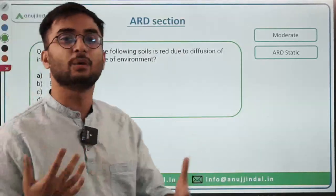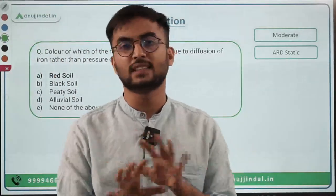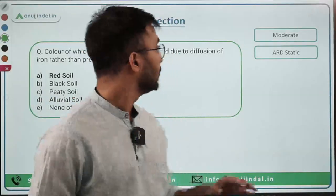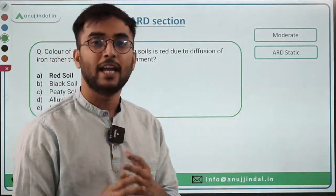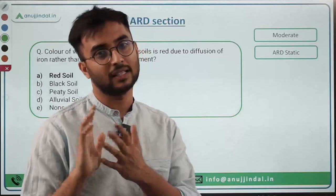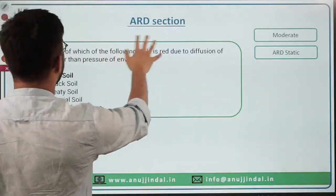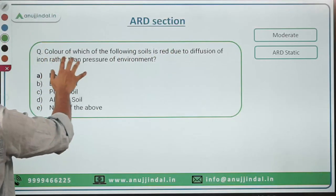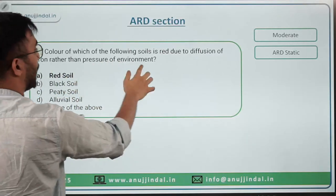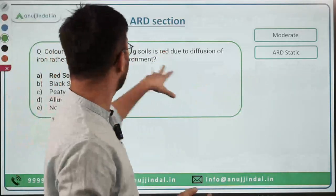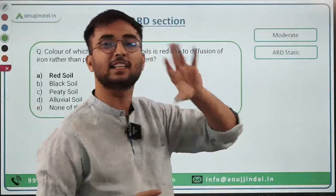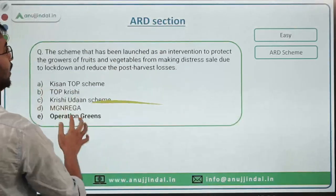Now let's look at some actual questions to understand their nature. If you understand the nature of the questions, the entire ARD section becomes a cakewalk. First question: 'The color of which soil is red due to diffusion of iron rather than pressure of environment?' This is a moderate, direct static question from the soil section. The answer is Red Soil.